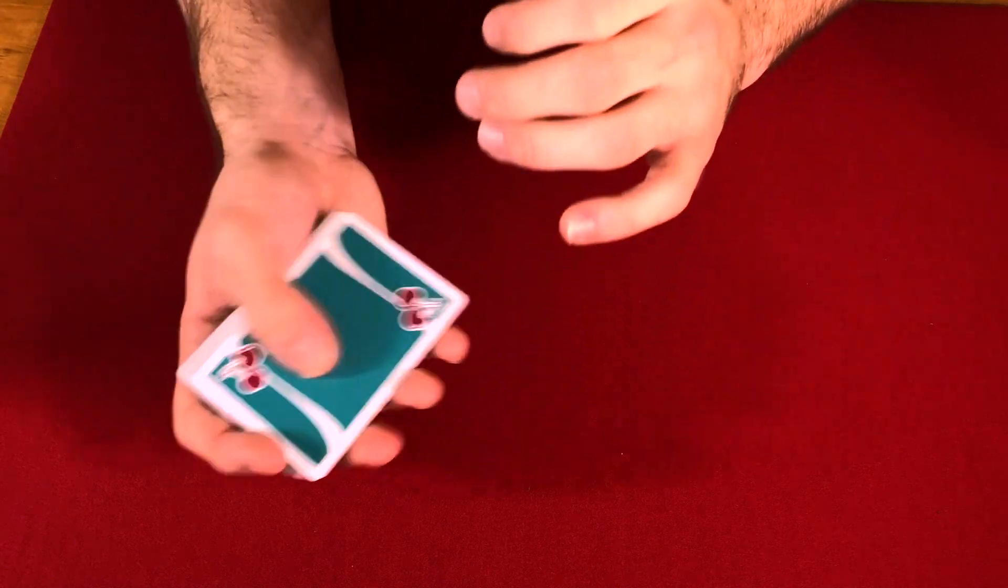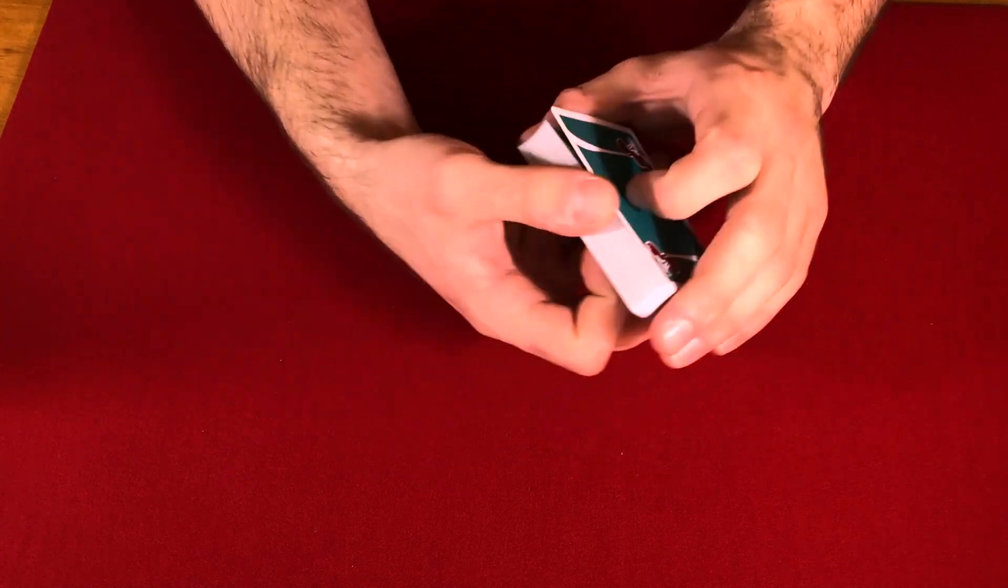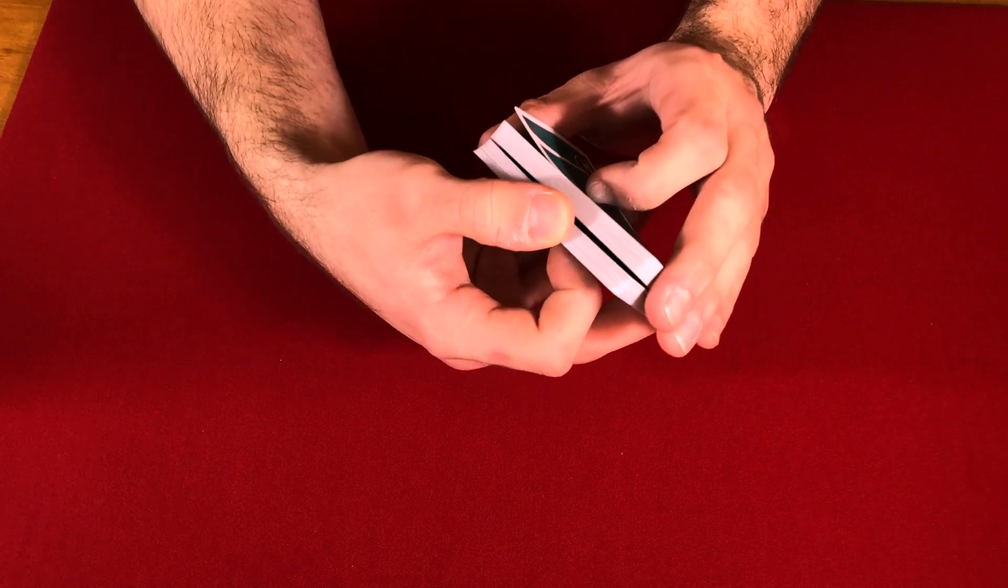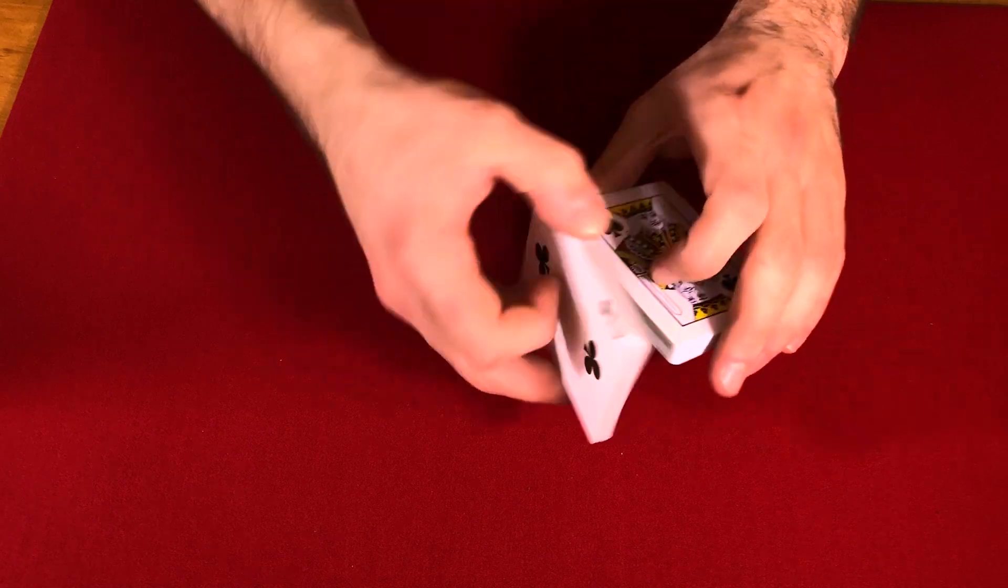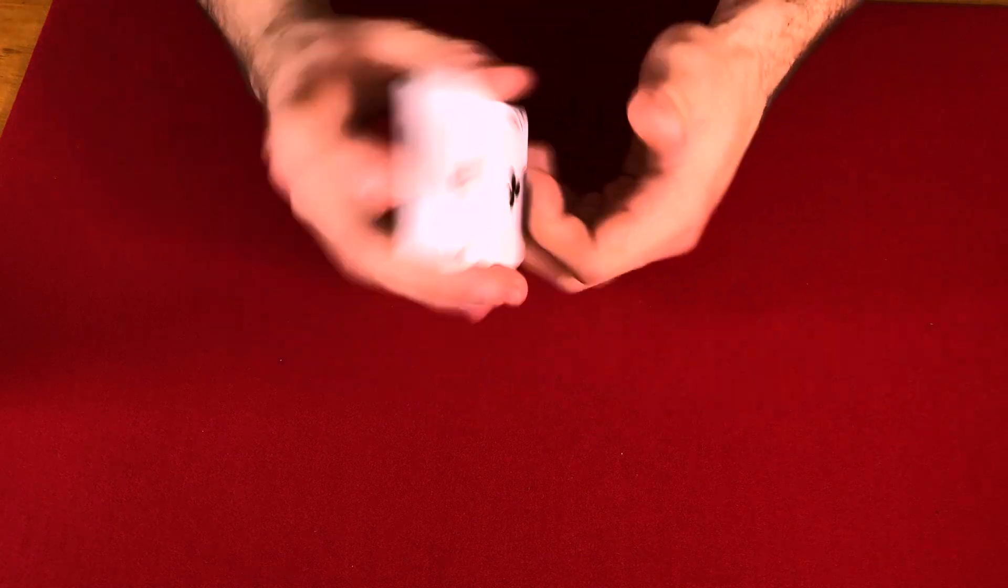Now once it's on top of the pack here, again get your break, clip the deck here, and you're going to take cards from the bottom, turn them face up, maintaining the break, get the rest of the cards on the bottom and turn them face up.